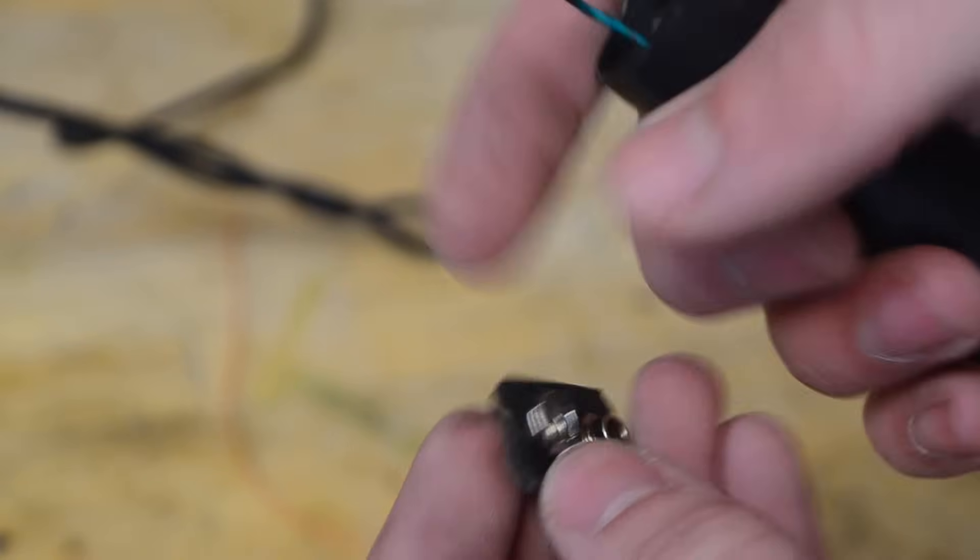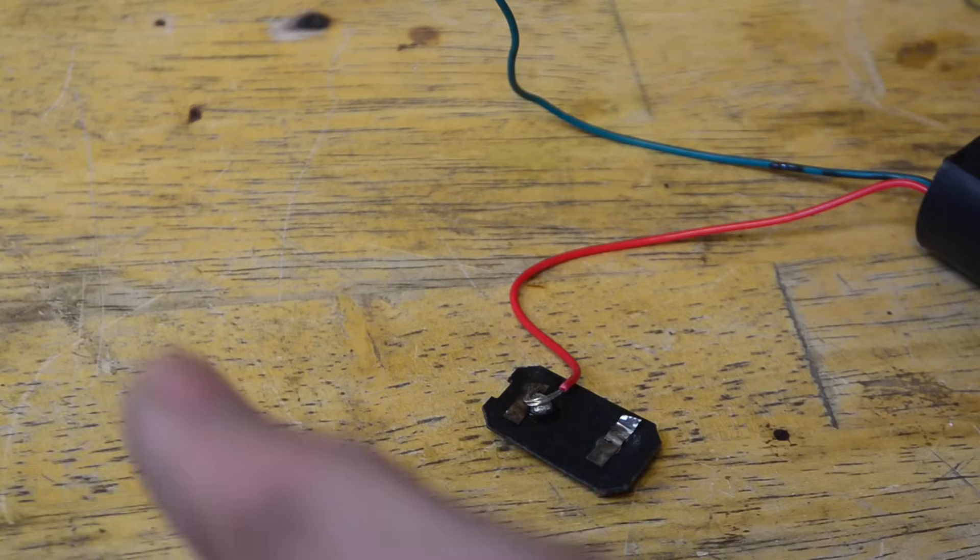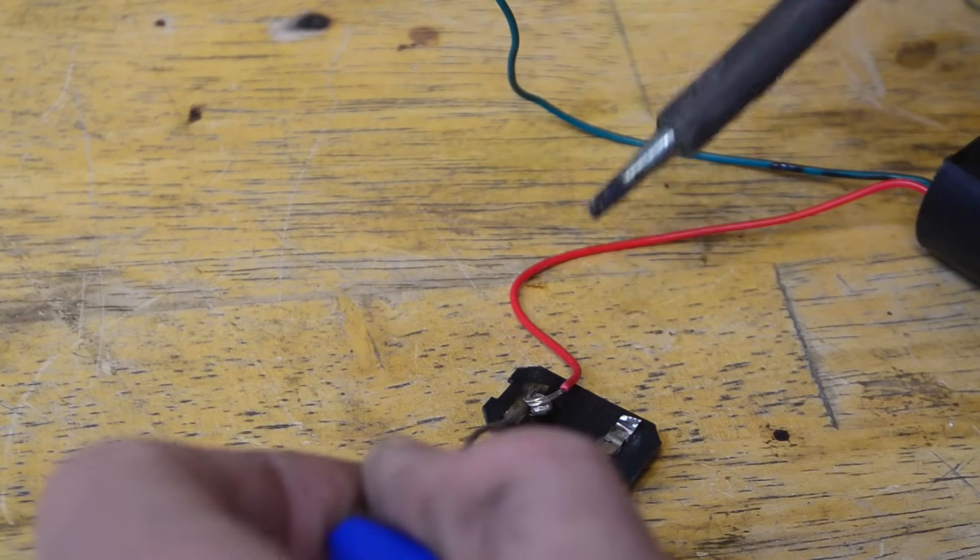Now we're going to solder this red wire from the boost converter onto this pad back here. I'll start by putting a little pad of solder there. Now I have that red wire placed on top and we're going to just solder it on.